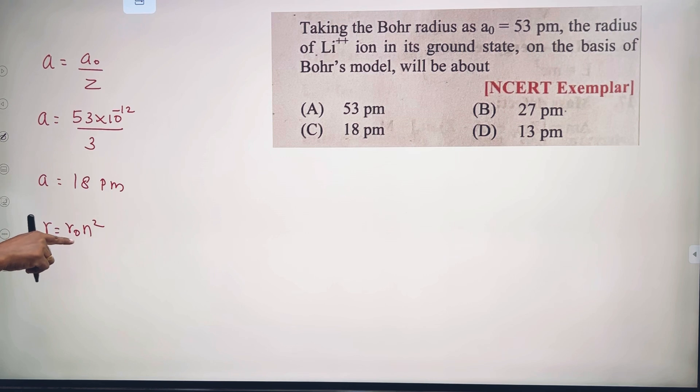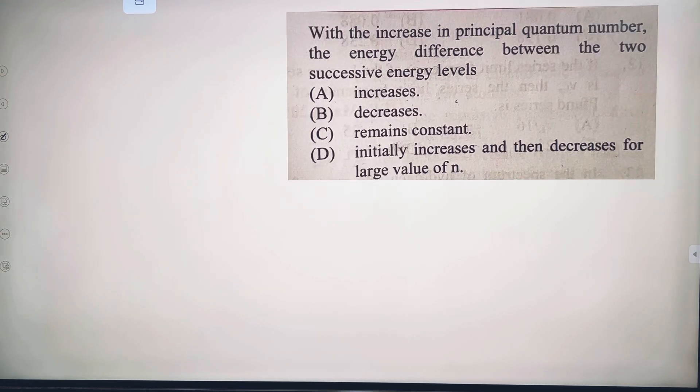With increasing principal quantum number, the energy difference between two successive energy levels decreases. The gap gets smaller as you go up the energy diagram. Option B.